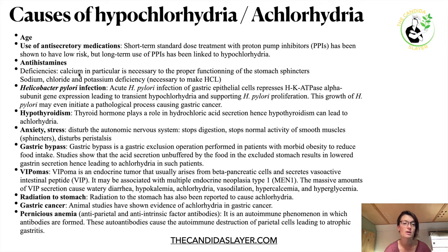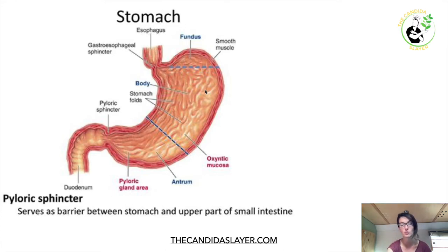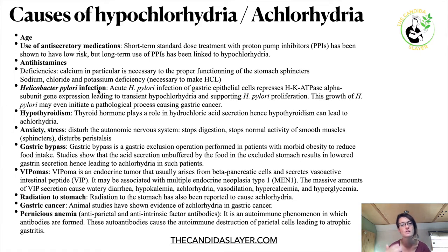H. pylori can cause hypochlorhydria — it goes both ways. You will get H. pylori infection if your stomach is not acidic enough, and H. pylori in turn suppresses the acidity of your stomach. Everybody has H. pylori; the problem is only when you have too much of it. If you have hypothyroidism you can also have hypochlorhydria, because your thyroid controls many things in your body, including proper stomach functioning.